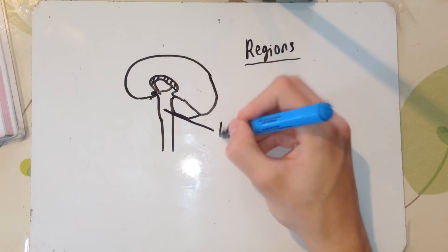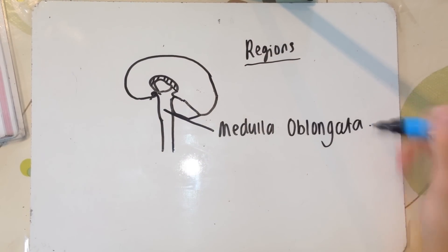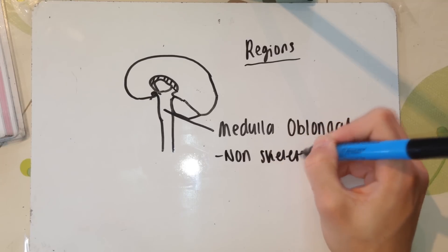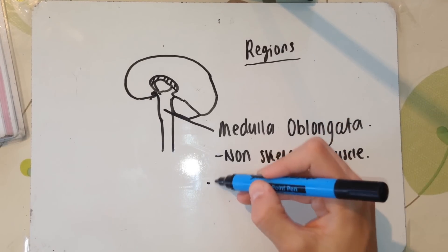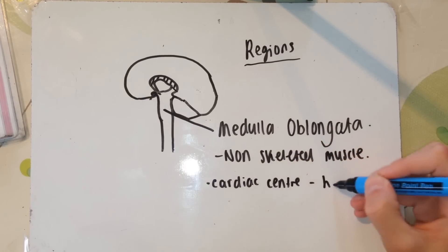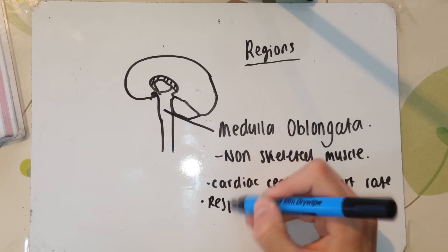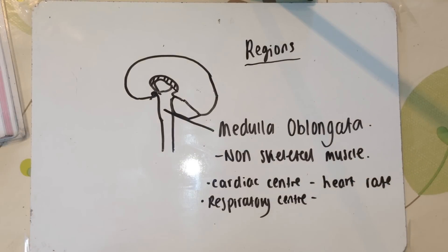Next, you have this long thing here. This is your medulla oblongata. And this is essentially in control of all the non-skeletal muscles. So that's all the muscles we can't consciously move. As you know, you've got involuntary, voluntary, and cardiac muscle. So the non-skeletal muscles mean our involuntary and our cardiac muscles are being controlled by the medulla oblongata. So you've got things like the cardiovascular centre, the cardiac centre, the respiratory centre, all these sorts of mechanisms that control the heart rate, the breathing rate, and things like that are located here.